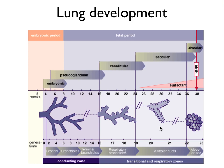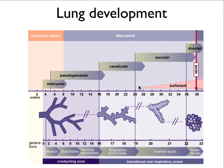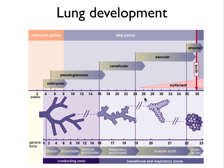If you're born before around 24 weeks, before surfactant is being made, you'll have a problem because your lungs won't be able to stay open. Or if you're born with a genetic defect in surfactant production, then also the lungs will collapse.